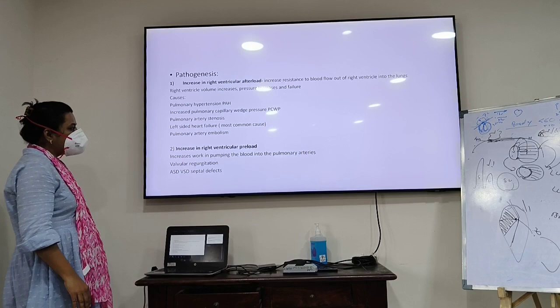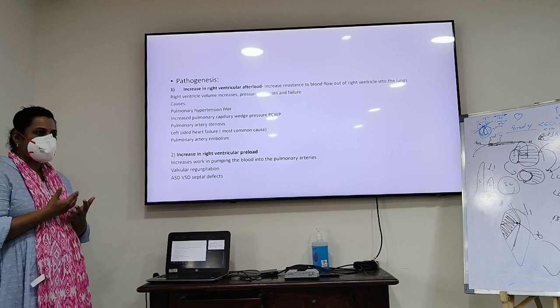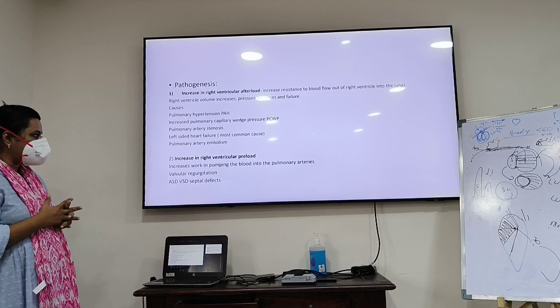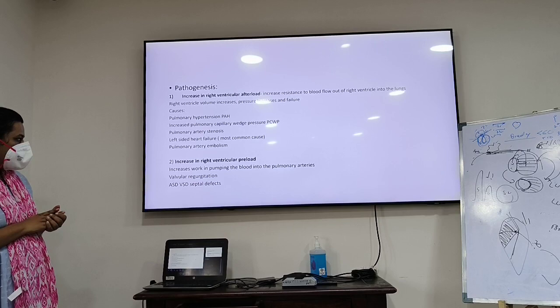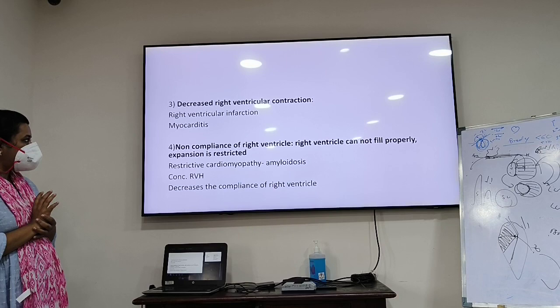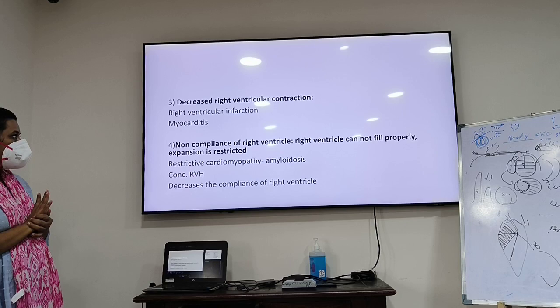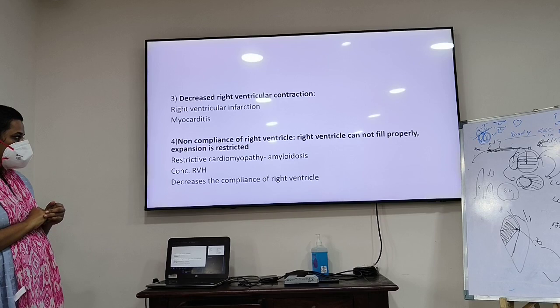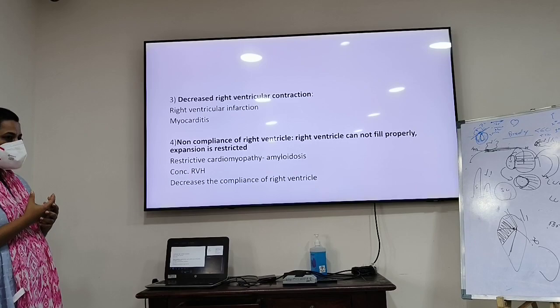If there is an increase in right-sided preload, volume and pressure increase, causing back pressure on the RA — IVC congestion, hepatic congestion, and peripheral edema. If there is increased work pumping blood into the pulmonary artery, causes include valvular regurgitation, ASD, VSD, and septal defects. A decrease in right ventricular contractility — from RV infarction or myocarditis — can also cause RV failure. Non-compliance of the right ventricle seen in restrictive cardiomyopathy, amyloidosis, or concentric RVH decreases RV compliance.